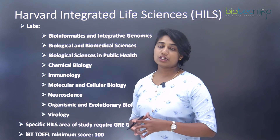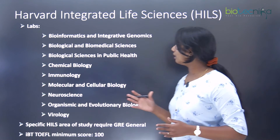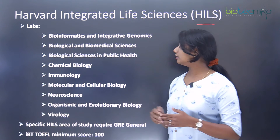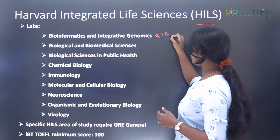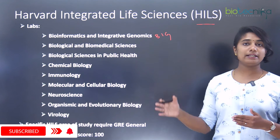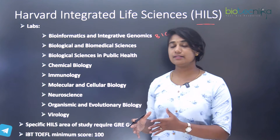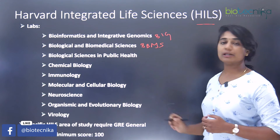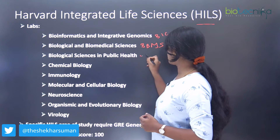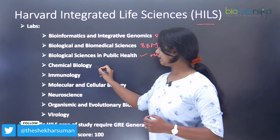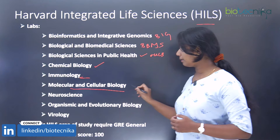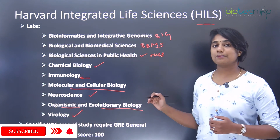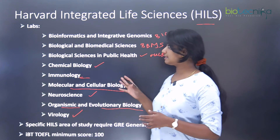The last department for biosciences at Harvard is Harvard Integrated Life Sciences, or HILS. It has multiple labs, some of which also appear under DMS: BIG (Bioinformatics and Integrative Genomics) and BBMS (Biological and Biomedical Sciences). HILS-specific labs include Biological Sciences and Public Health, Chemical Biology, Immunology, Molecular and Cell Biology, Neuroscience, Organismic and Evolutionary Biology, and Virology.